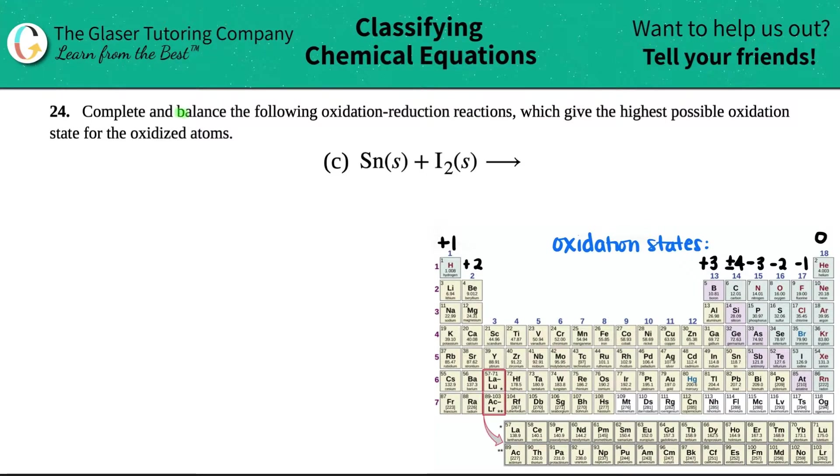Number 24. Complete and balance the following oxidation-reduction reactions, which give the highest possible oxidation state for the oxidized atoms. And then we have letter C.